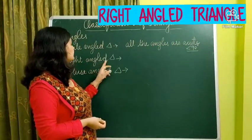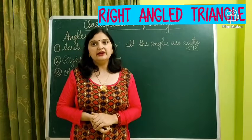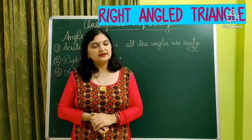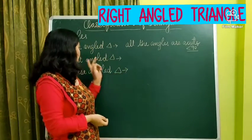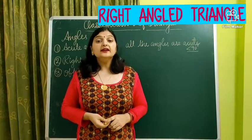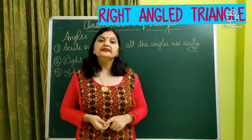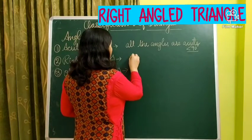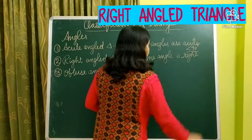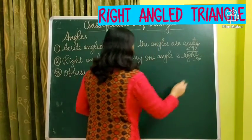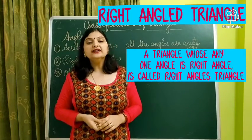Now the next is right angled triangle. In one triangle, there is either one obtuse angle or one right angle. A right angled triangle is a triangle having any one angle equal to 90 degrees. So the definition of right angled triangle is: a triangle whose any one angle is a right angle, that is equal to 90 degrees.